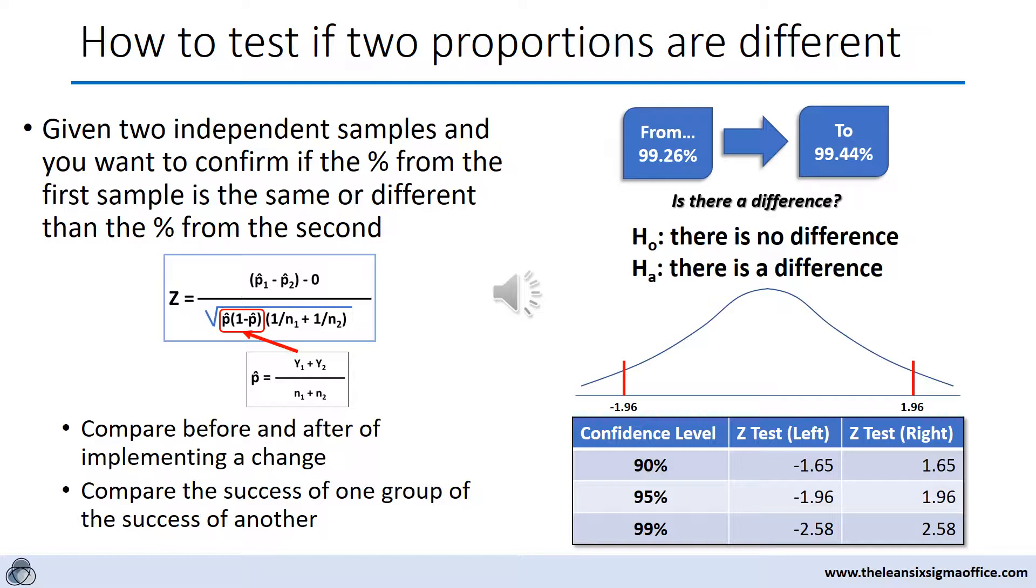You may have some who say the numbers are clearly different and we need to do something about it. You may have others who say yeah, they may be different but they're not different enough. By clarifying if there is a difference, you can make a rational business decision to determine if resources like time and money should be expended to determine why there is a difference.